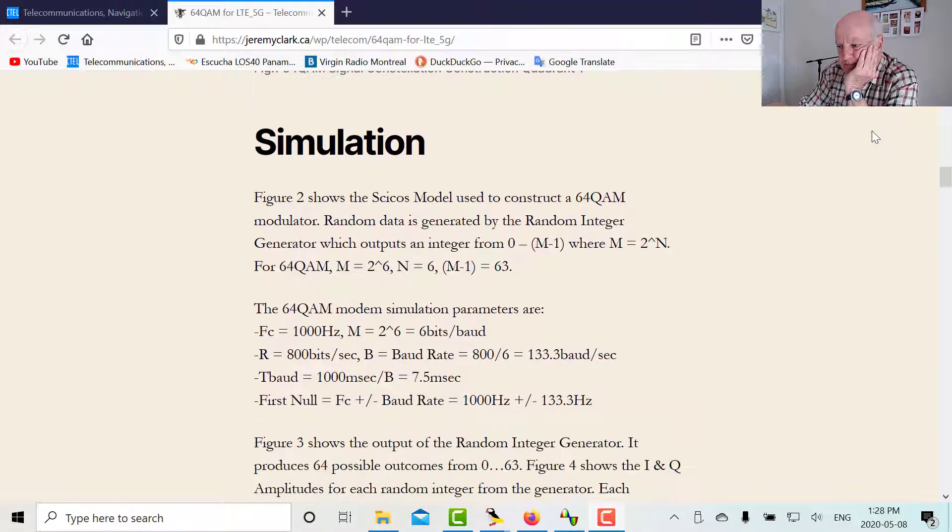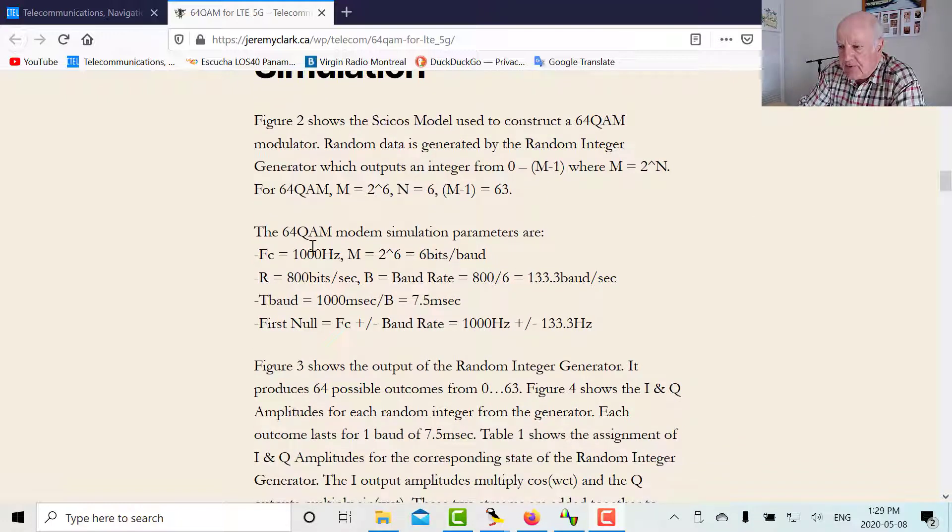Now in terms of simulation, let's look at a Psychos diagram that we use to simulate it. And here are the parameters that I'm going to use. I'm just going to pick for simplicity, I'm going to use a carrier frequency of 1000 hertz. Typically these frequencies would be much bigger, but for simplicity, I'm just picking 1000 hertz. Again, the number of levels will be 2 to the 6th, which is 64. Six is the number of bits per baud or symbol. My bit rate is going to be 800 bits per second. The baud rate will be a sixth of that or 133.3 bauds. The time per baud is going to be 7.5 milliseconds.